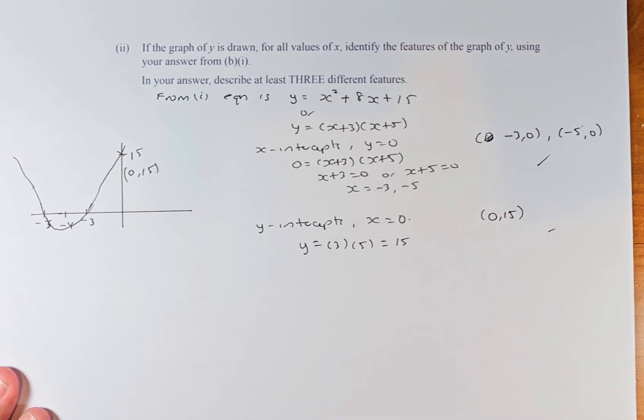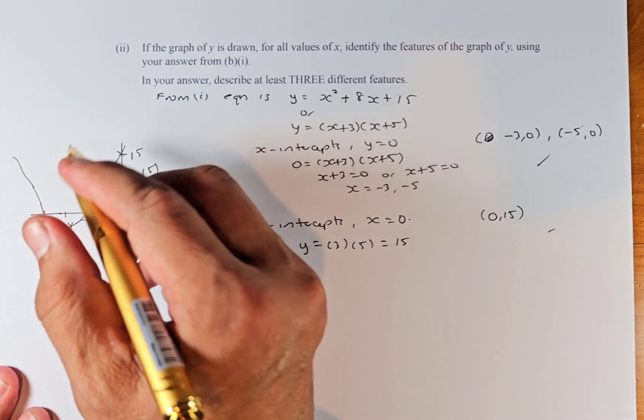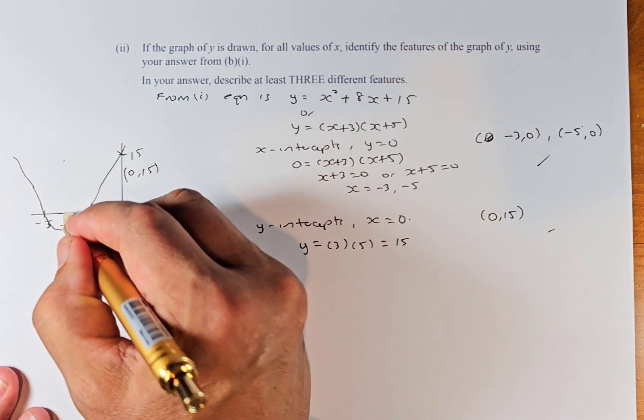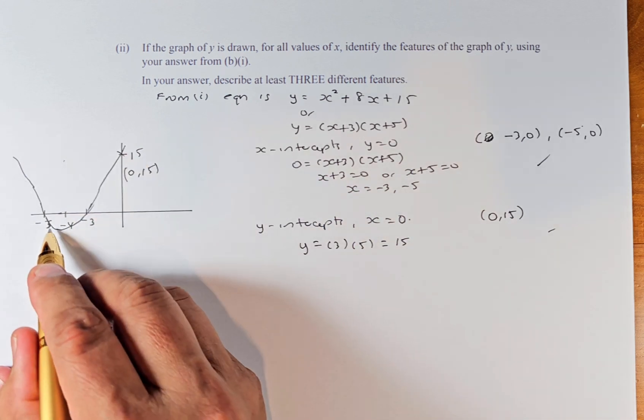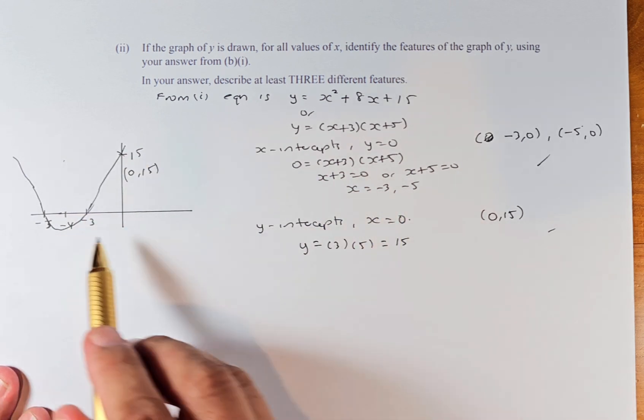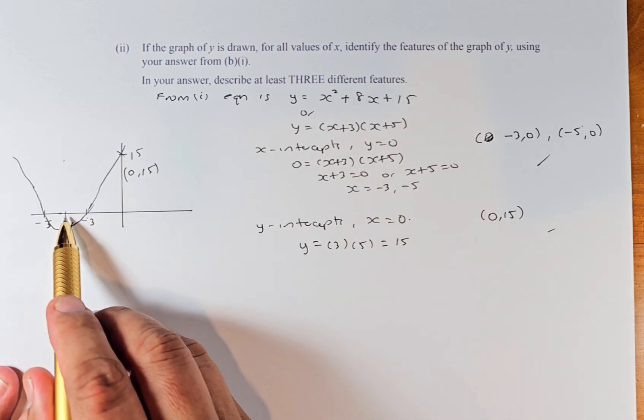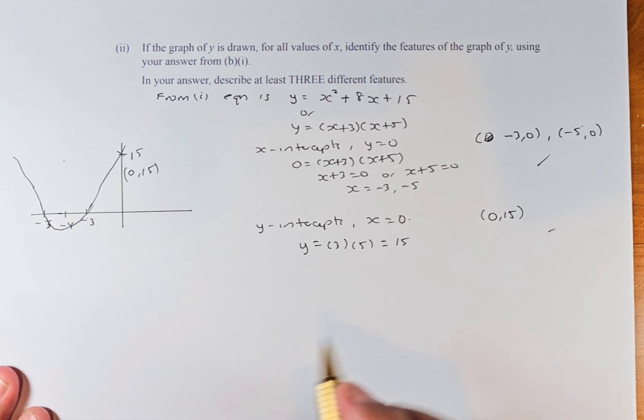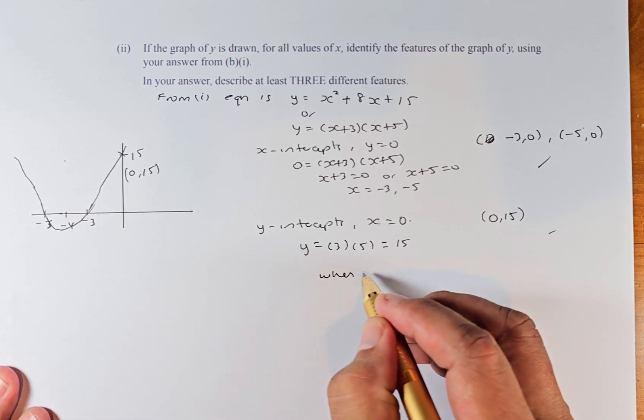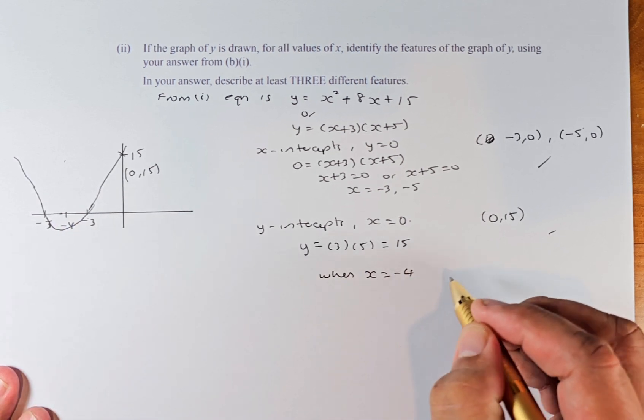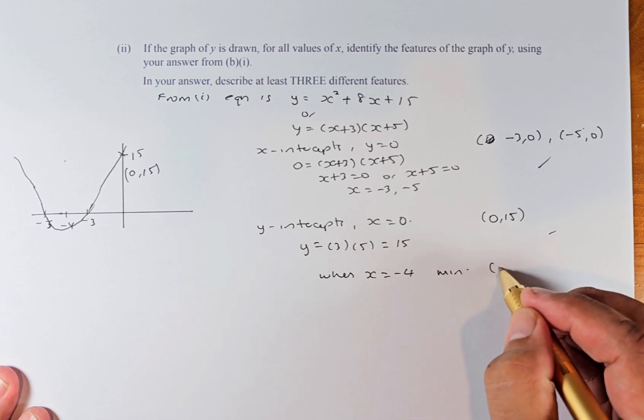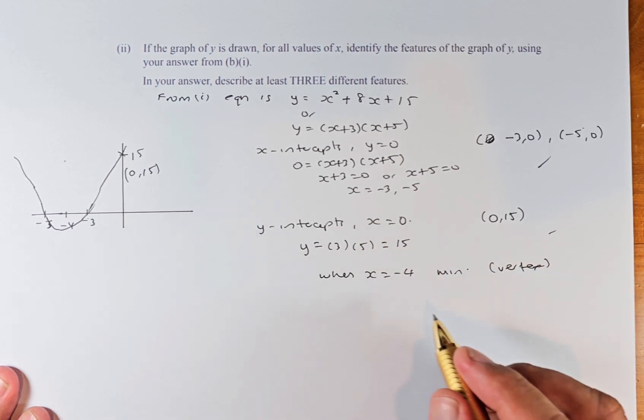So we've got two features now. And the third feature, we need to find the symmetrical or the minimum point. The minimum point is just going to be in between, because it's minus 3 and minus 5. Minus 3 and minus 5, the middle value is going to be minus 4. So when X is minus 4, that is the minimum point, the vertex.